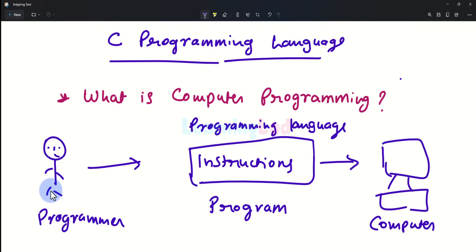So here the programmer will provide the instructions to the computer by using a programming language, and according to those instructions the computer will work. C is one of the programming languages that can be used to provide instructions to the computer.